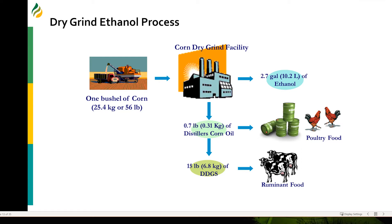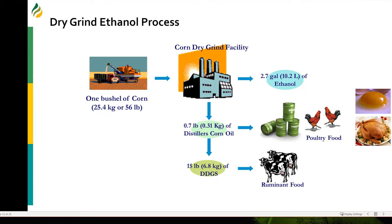Corn has endogenous lipases and yeast also produces lipases, so during fermentation the triacylglycerols tend to break down and create a lot more free fatty acids. This oil started going to the poultry industry because it carried oxygenated carotenoids that give yellow color to egg yolk and golden color to meat. The rest of it went to the biodiesel industry, mostly exported to Europe.